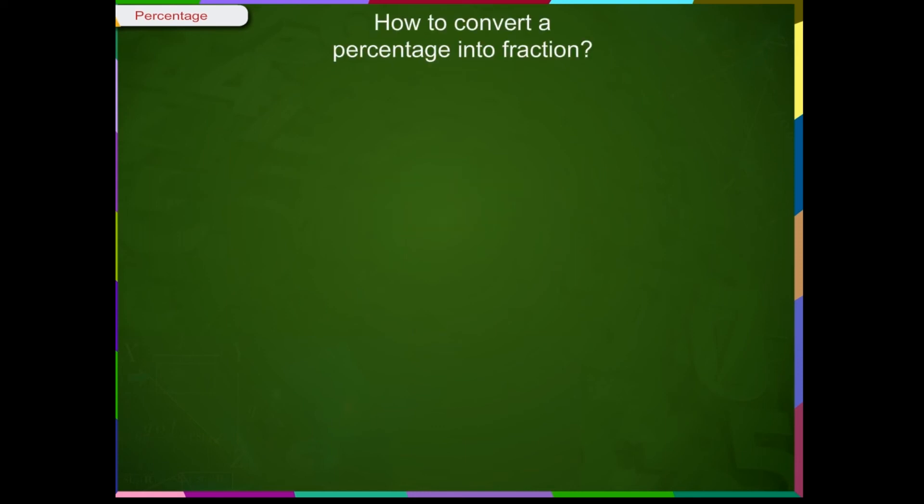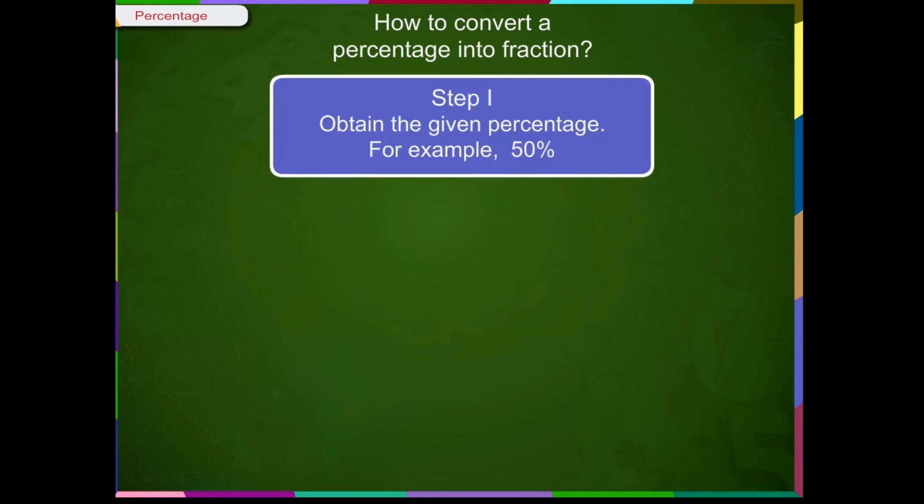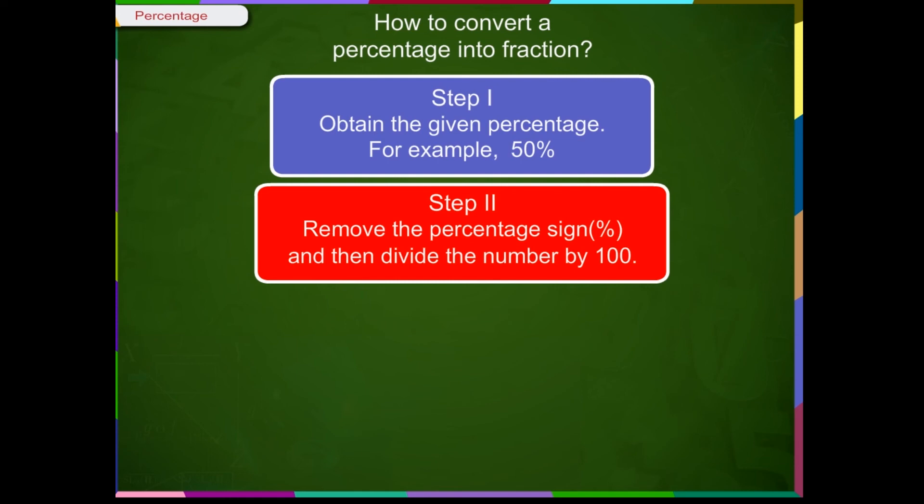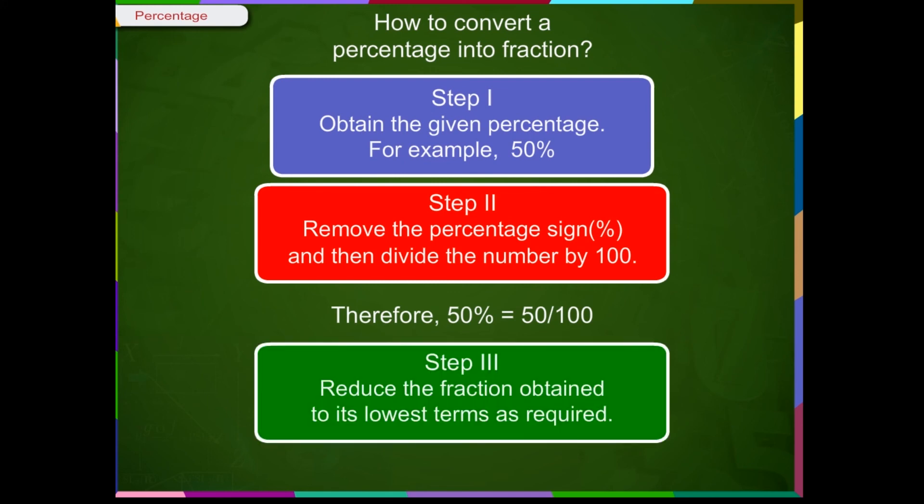How to convert a percentage into fraction? We will follow these steps. Step 1: Obtain the given percentage, for example, 50%. Step 2: Remove the percentage sign and divide the number by 100. Therefore, 50% = 50/100. Step 3: Reduce the fraction obtained to its lowest terms as required.